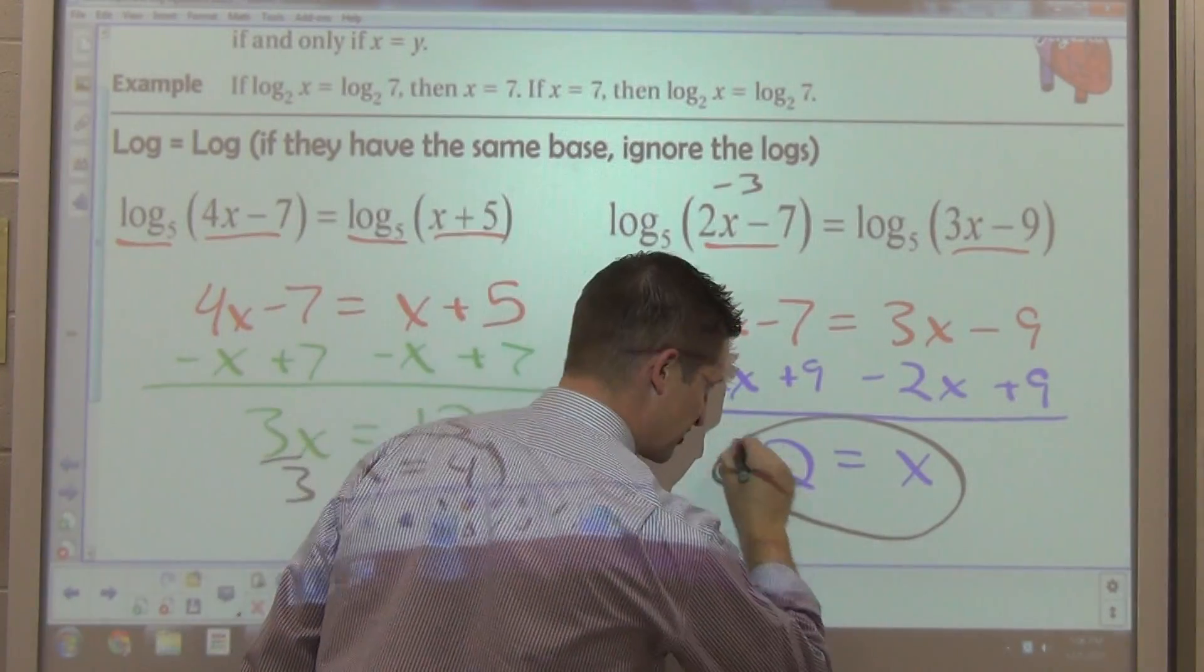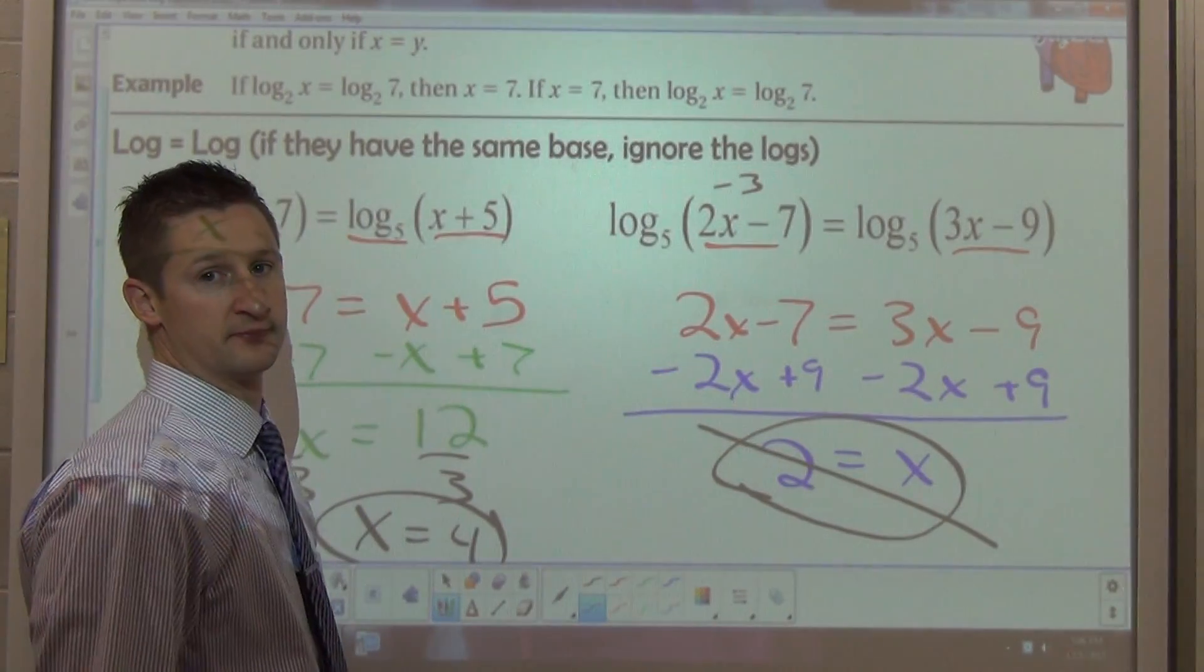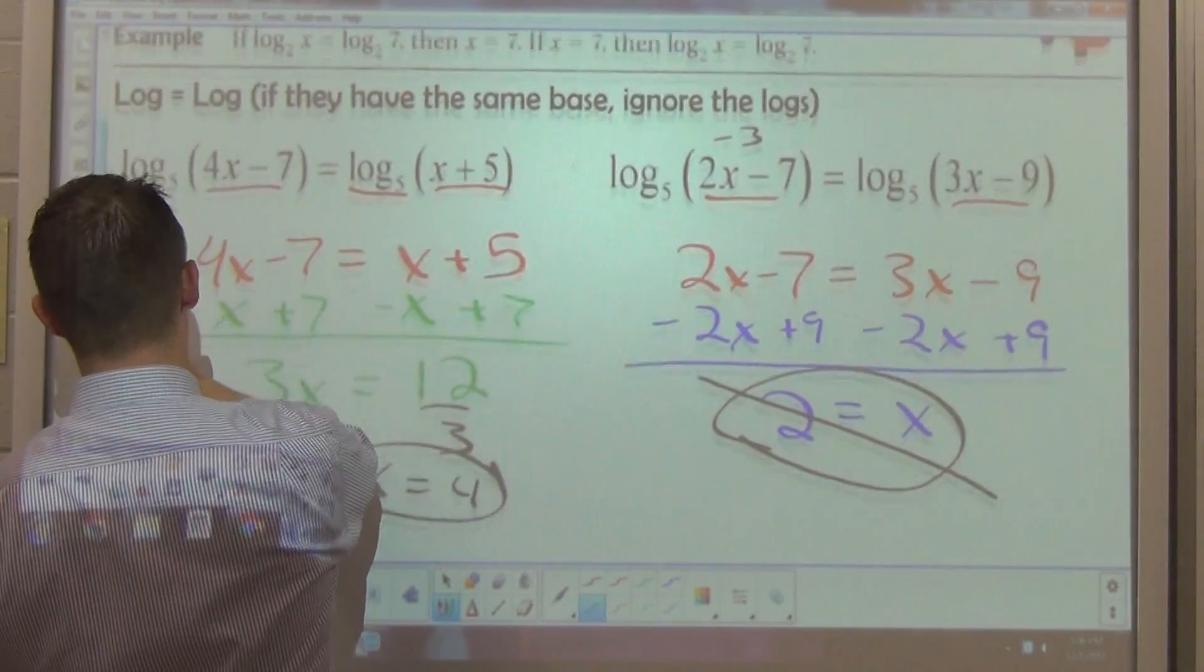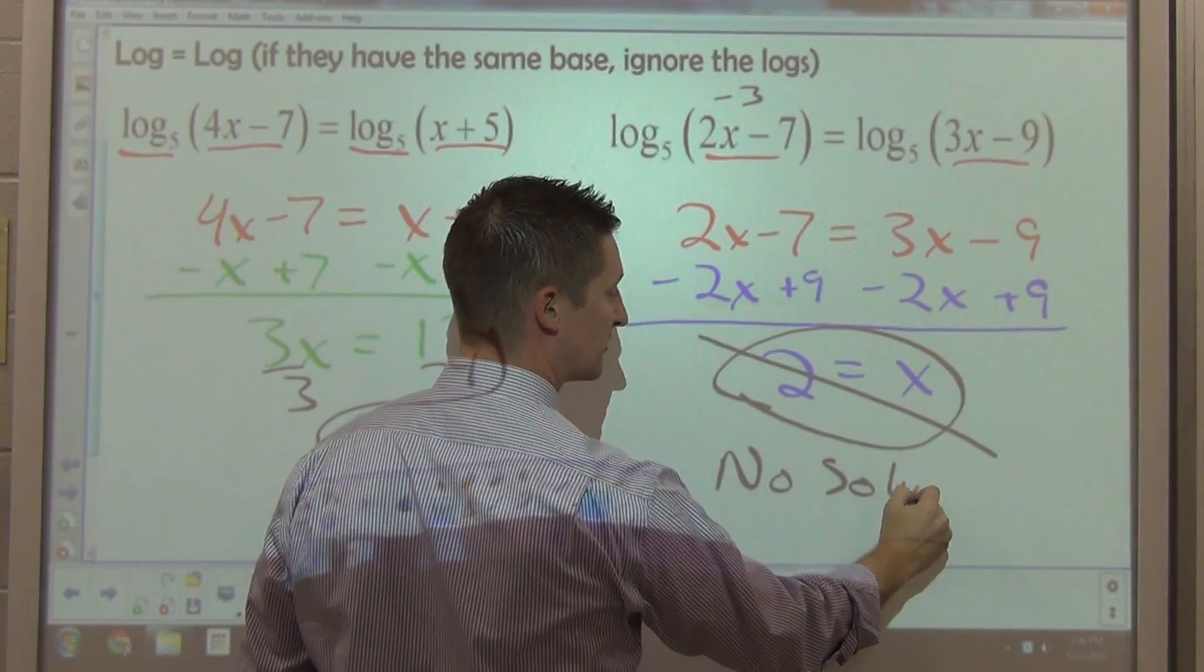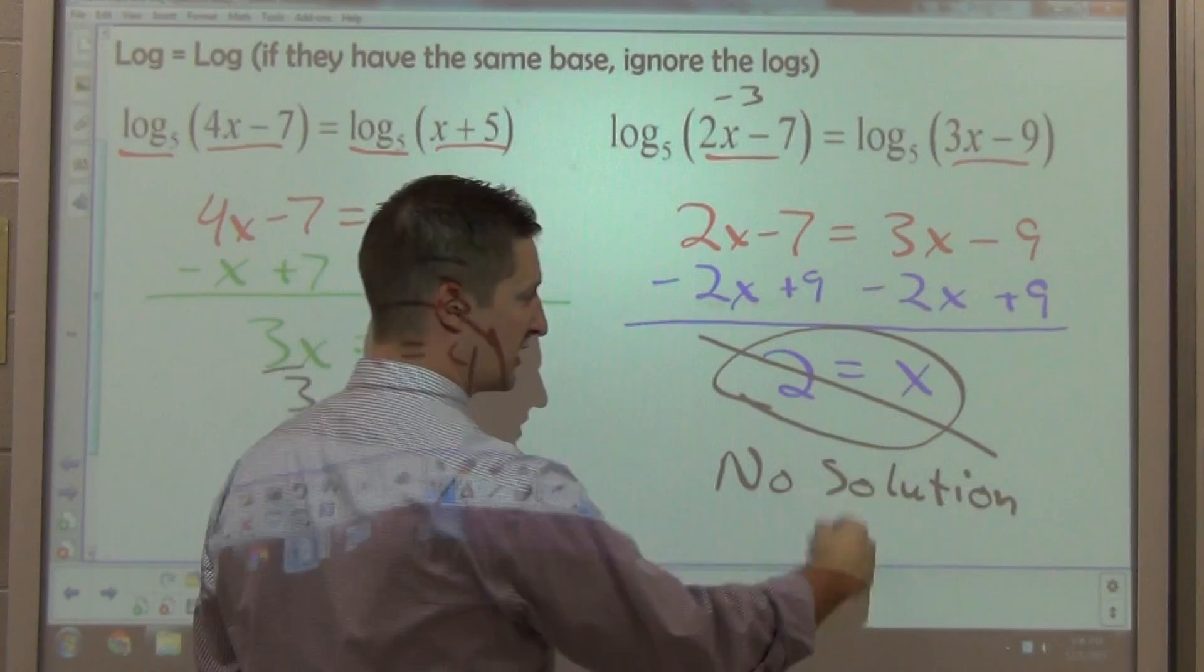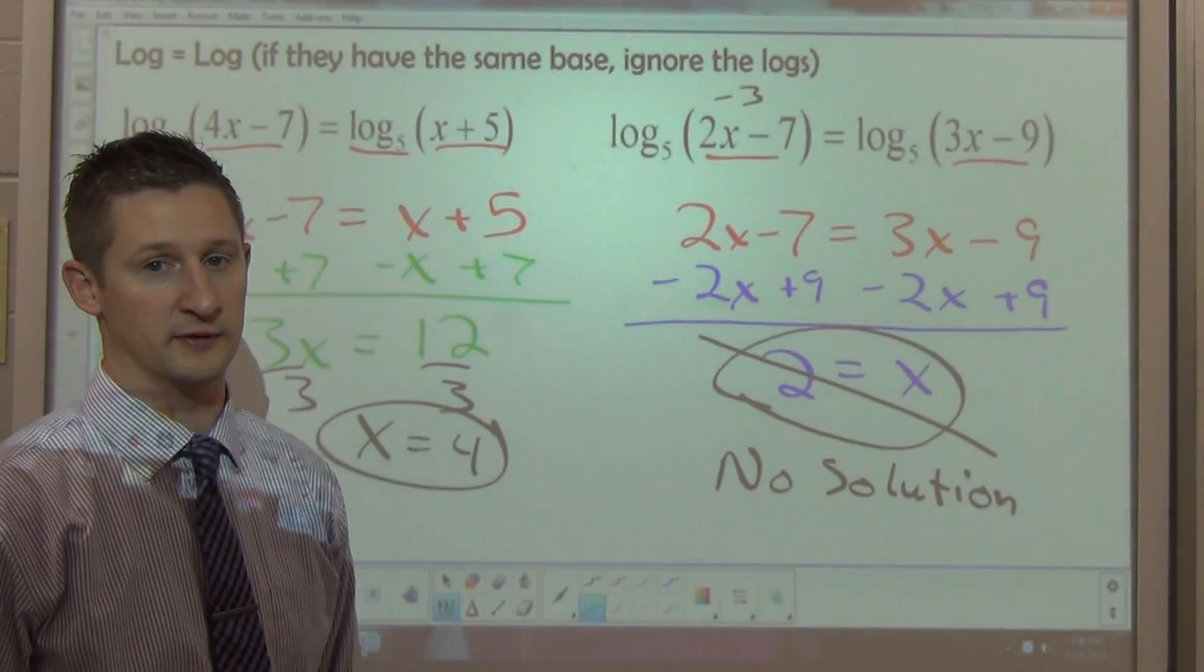It would be an unreal thing, and we don't learn about that until a long, long time from now in math. So this would be an extraneous solution. You'd actually have to say, for this one, our answer would have to be that there is no solution. Because the only thing we came up with is extraneous, so that means there really isn't an answer to this one.